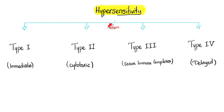Hypersensitivity: type 1, type 2, type 3, type 4. Type 1 is immediate, type 4 is delayed. How about type 2? Cytotoxic. And type 3 — you have free antibodies floating in the plasma.